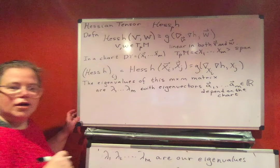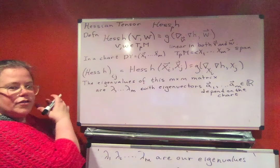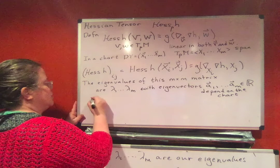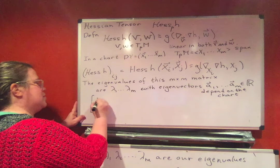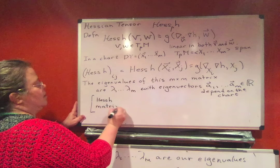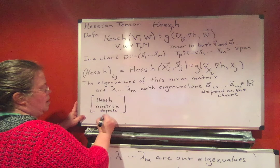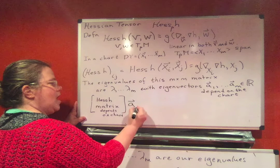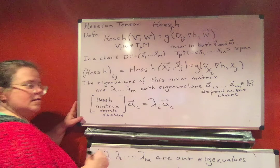You'll see what I mean in a minute. But what we're doing is we're using this Hessian of H_ij and it's going to depend on the chart. This formation of this as a matrix, and if we use that matrix, this Hessian H matrix, I'm going to call it Hessian H matrix. It depends on the chart. So this matrix times vector a_i equals lambda_i a_i.